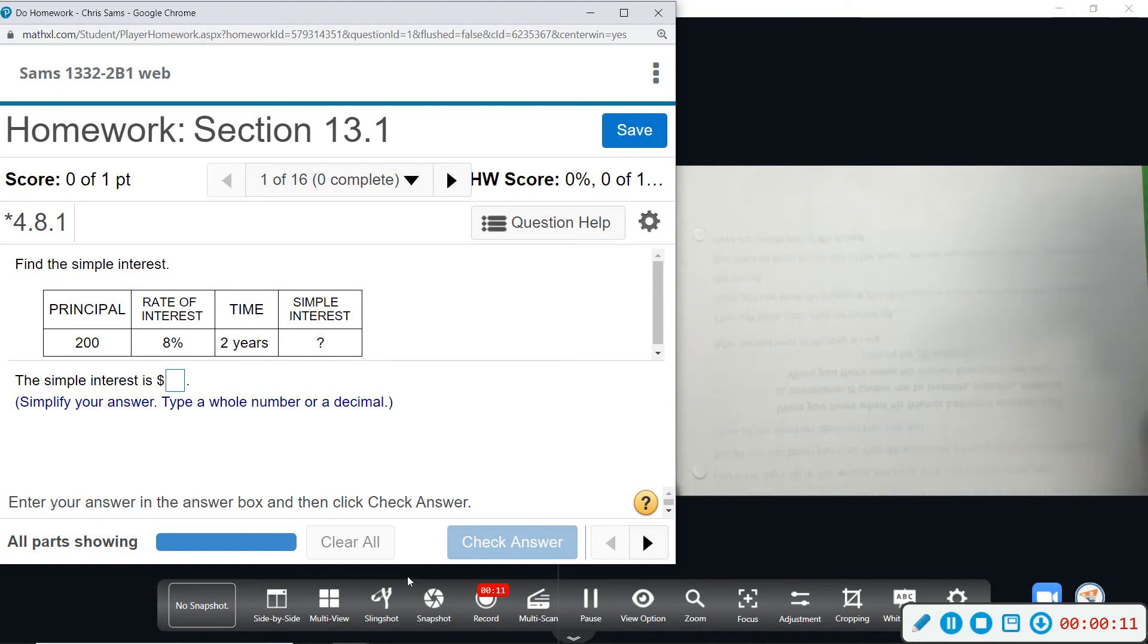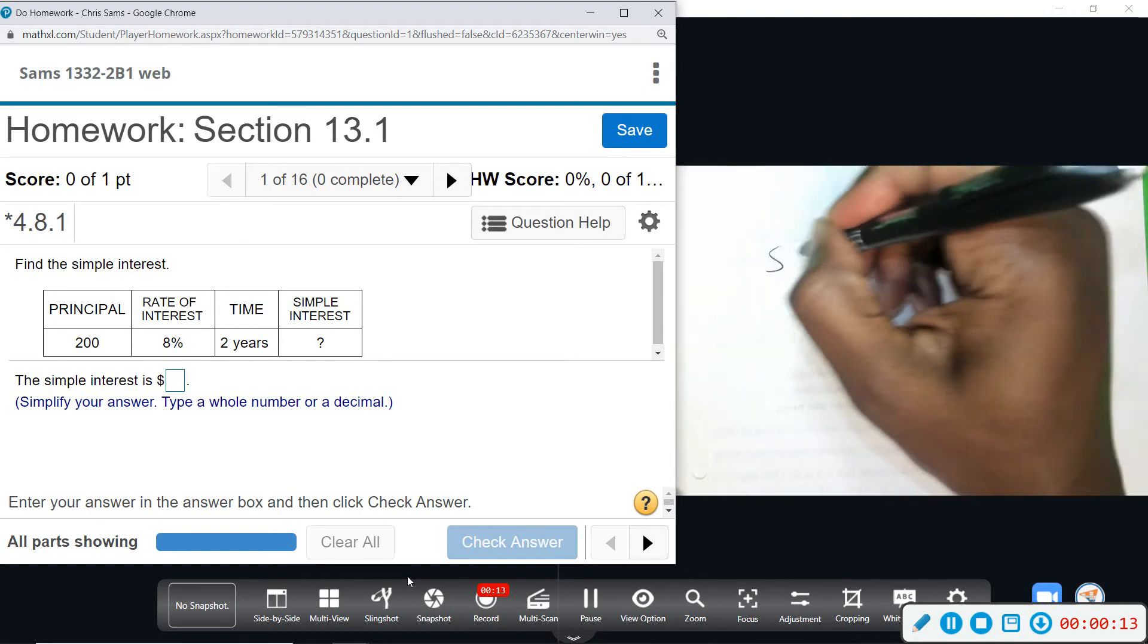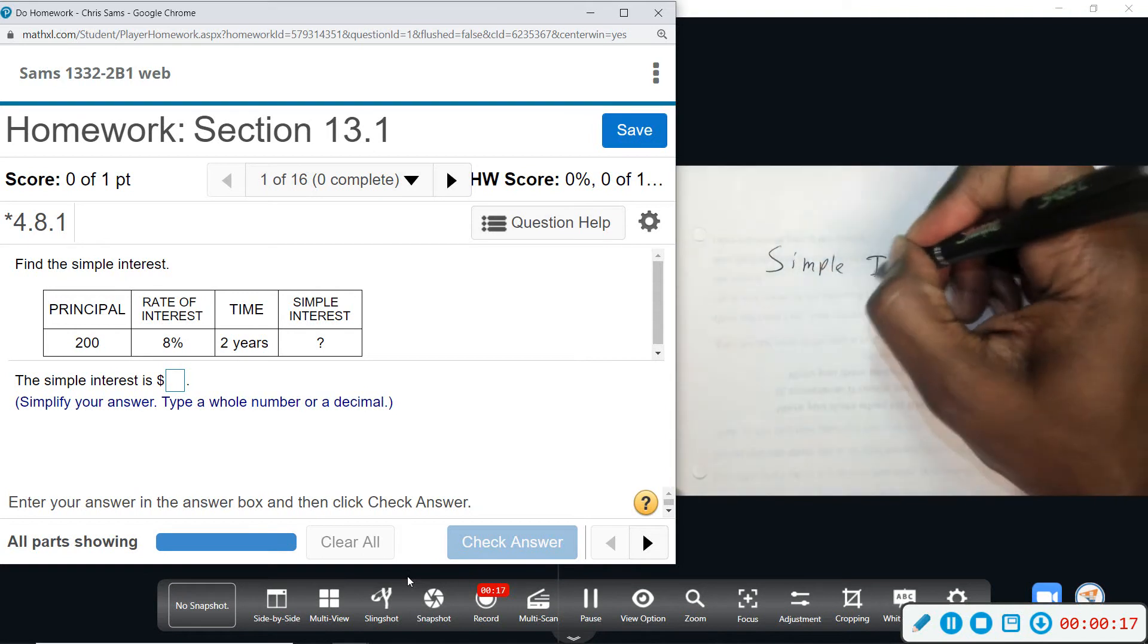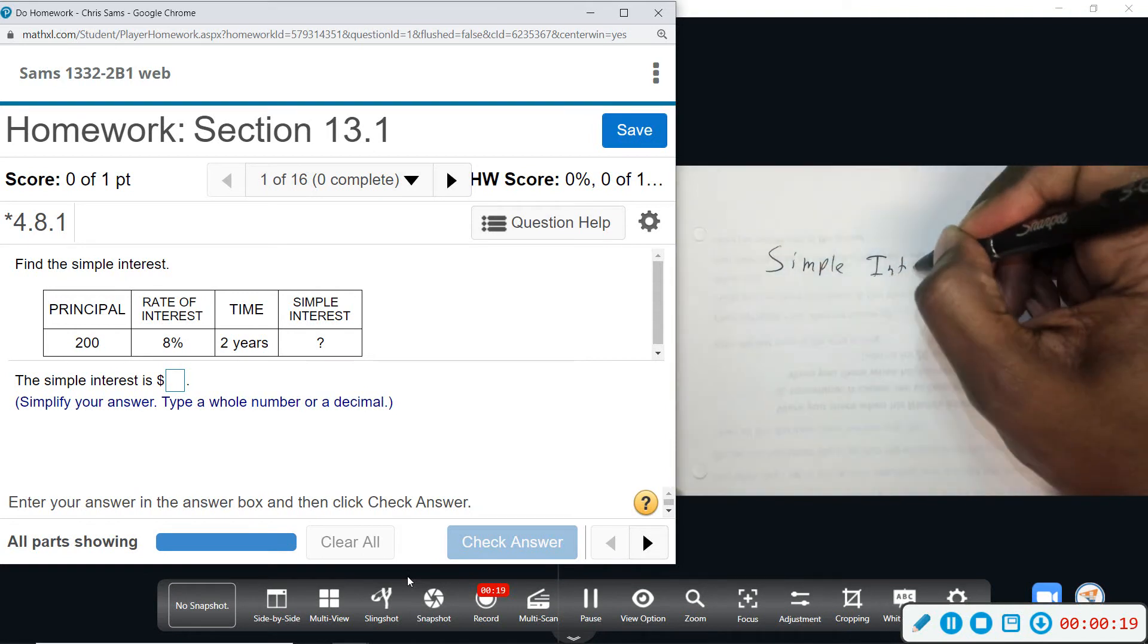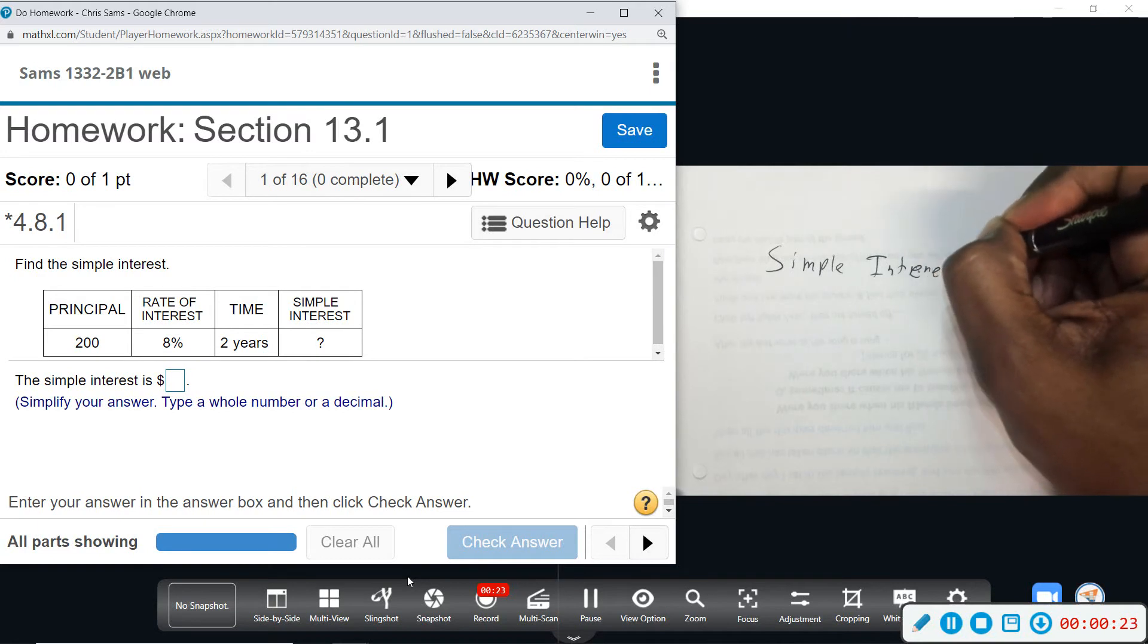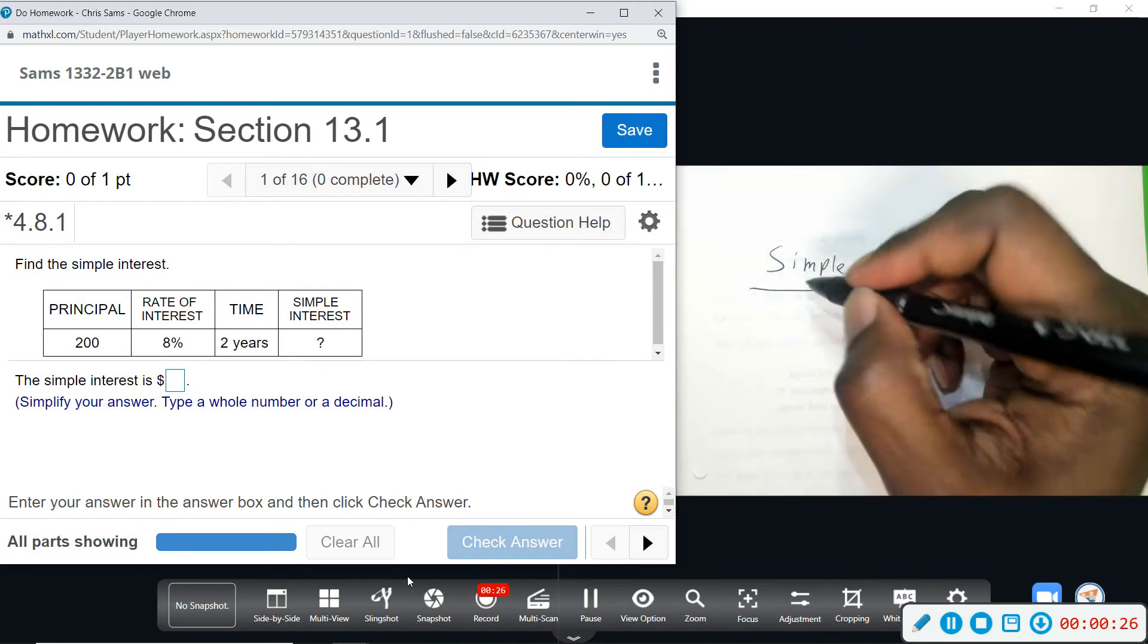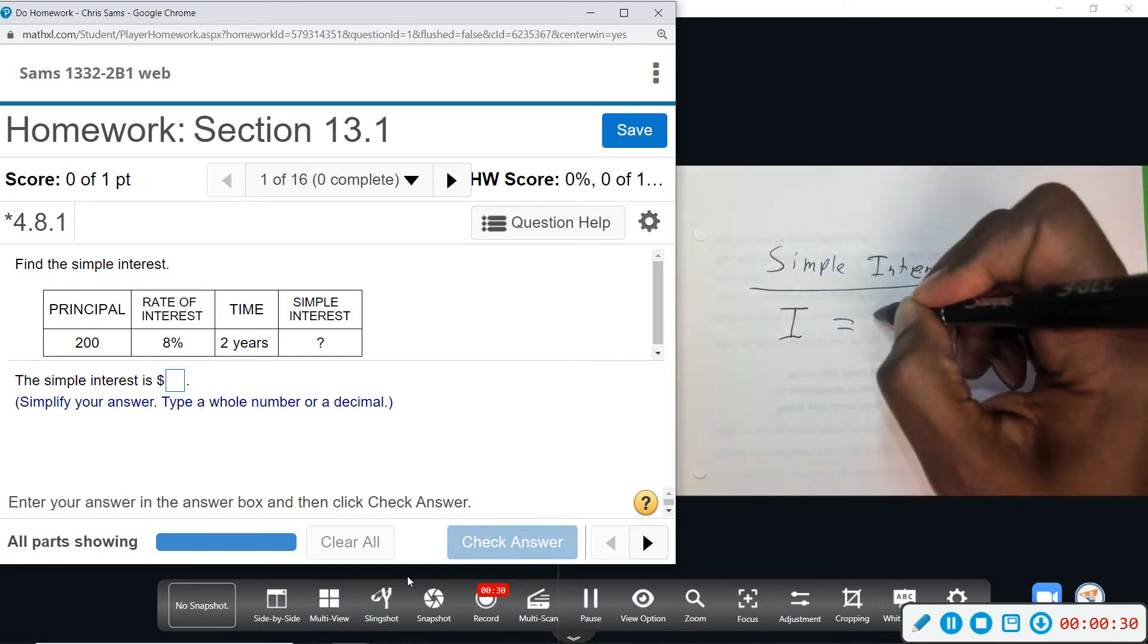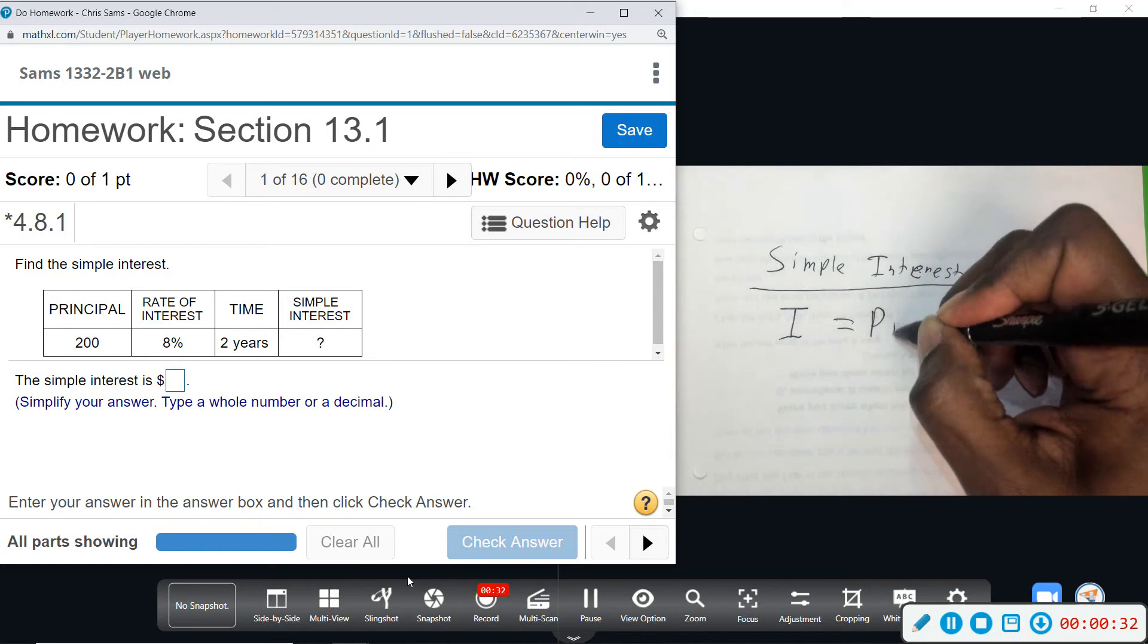Okay, so simple interest, there's a formula for it. Simple interest is I equals P R T. Principle, R is the rate as a decimal.